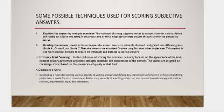Third, and most importantly — commonly used in the context of level assessments — is primary trait scoring. In this technique, the examiner primarily focuses on the content, delivery, presented argument, strength, creativity, and correctness of the content. Scores are assigned based on the appearance and quality of that trait. Developing a rubric involves identifying the key components of effective writing and defining performance levels for each component.